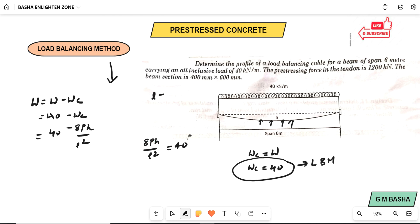I am taking here L equal to 6 meters. Carrying an all-inclusive load of 40 kilonewton per meter, already taken which is W here. The prestressing force in the tendon will be 1200 kilonewton. The beam section area will be equal to 400 by 600.